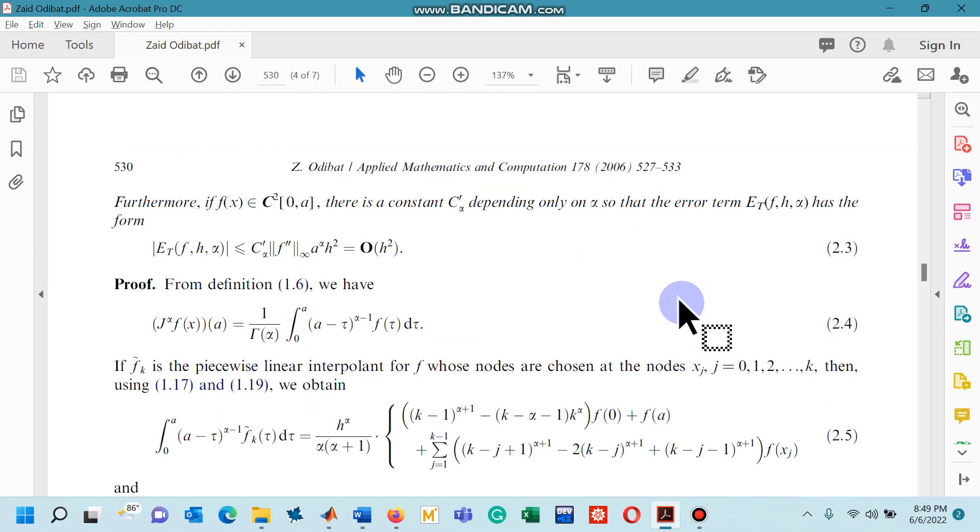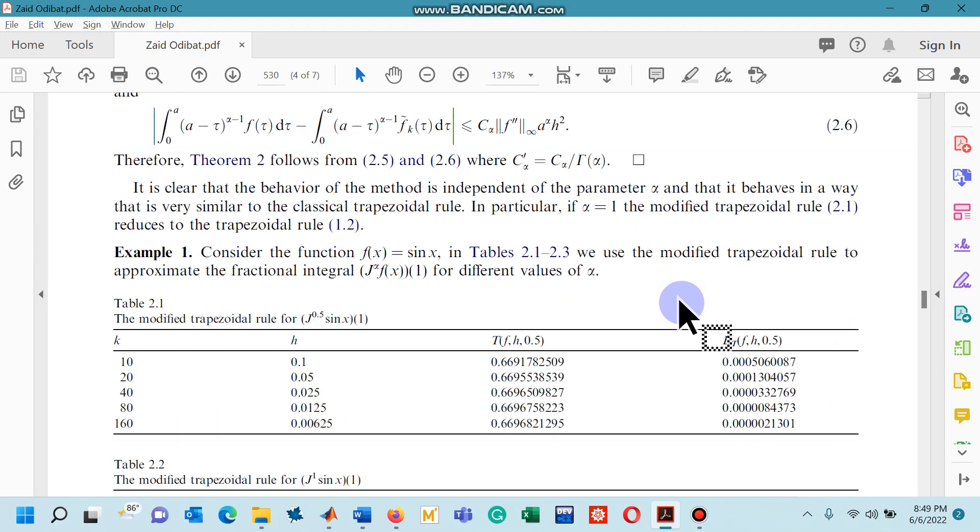I have tried to solve example 1 in MATLAB. So example 1 is given here and the function chosen by the author is sin x, the integration interval is from 0 to 1 while the half integral of sin function is being evaluated. So in the first column you can see number of steps h, the step size, approximated value obtained with the modified trapezoidal rule and in the last column absolute errors are shown.